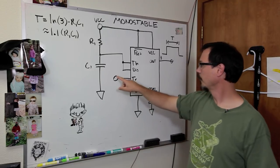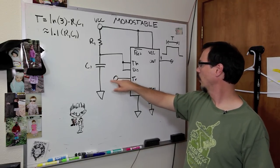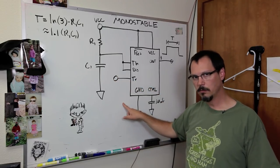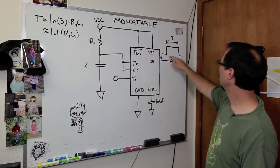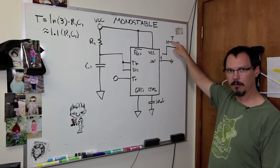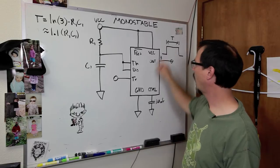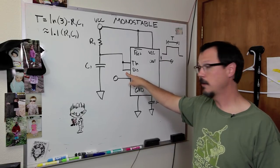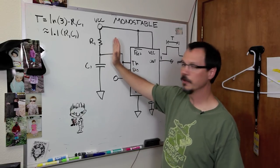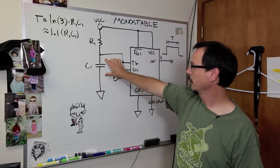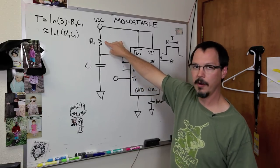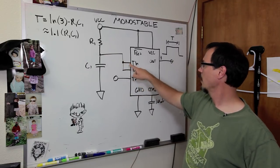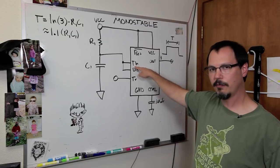Now, what happens is that you pull the trigger pin low, and when you do that, the output goes high. Crazy! And when the output goes high, the discharge pin goes to a high Z configuration, so this becomes an open circuit. Now, C1 starts charging through R1, right? C1 will charge until it gets to the threshold voltage.